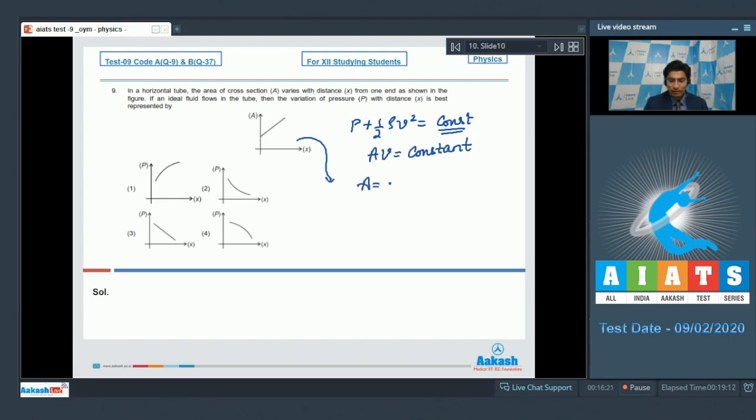Which means that if v is equal to constant by A, it will be equal to some constant divided by mx plus c.